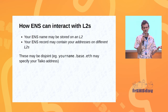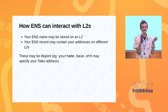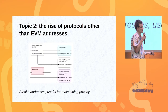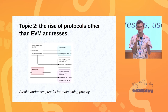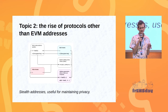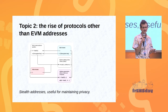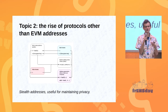The core message over the past year has been that Ethereum is switching to being an L2-centric ecosystem. Everything that is built needs to be built with both the possibility of activity on L1 and the possibility of activity on all kinds of L2s in mind. Topic two is the rise of protocols other than EVM addresses — a really important one. So far we've been talking about EVM addresses, but really there's a lot of stuff other than EVM addresses that is crucially important.